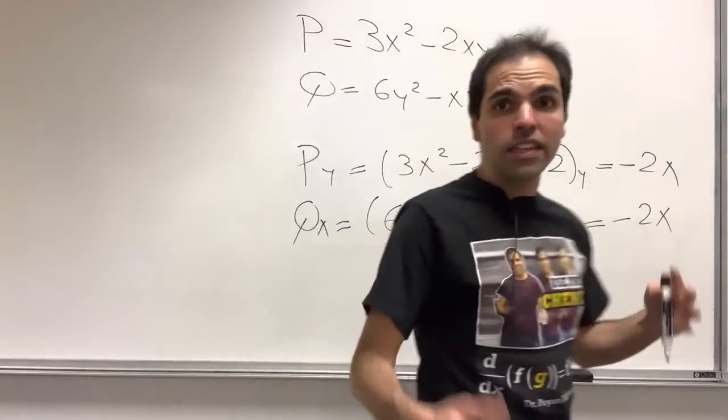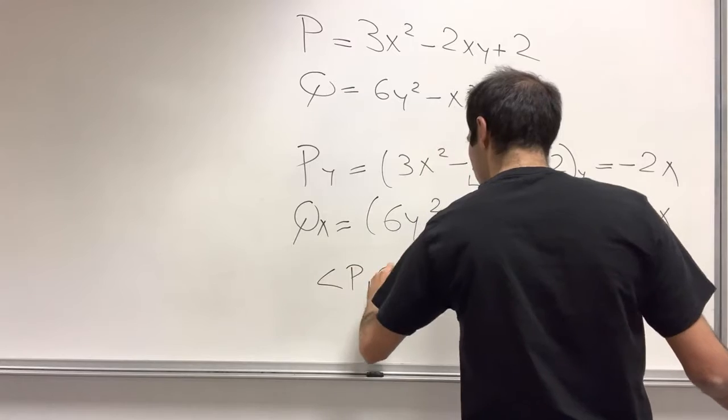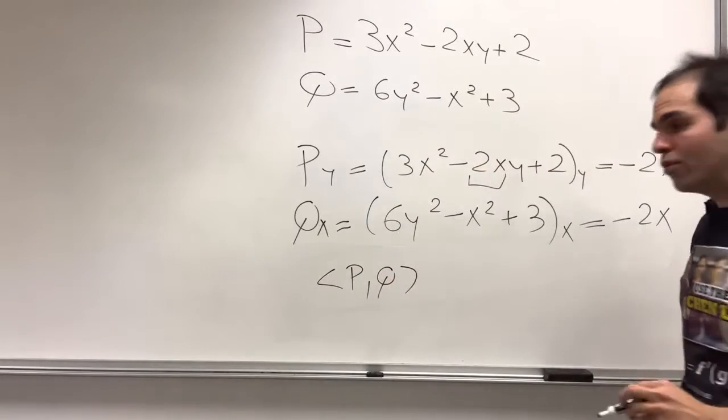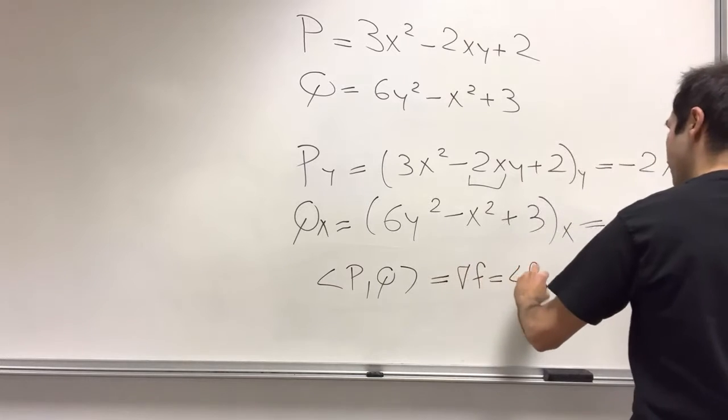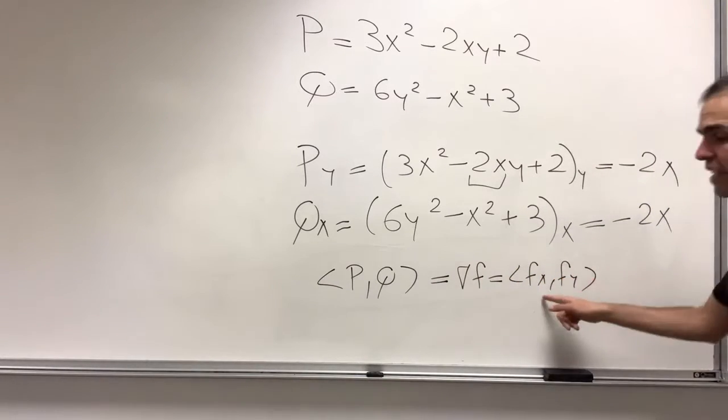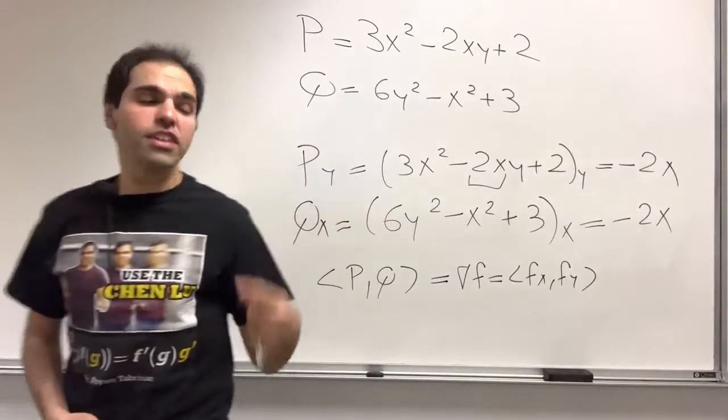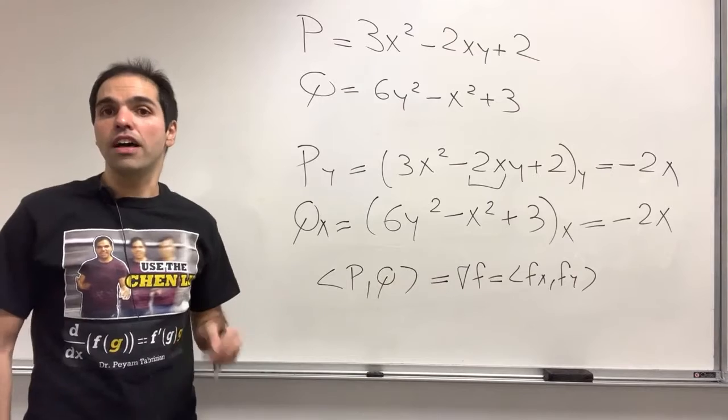Because what this is telling you is that if you take P, Q, this vector field if you wish, it is the gradient of a function. So it's gradient of f, so it's of the form f_x, f_y, which tells you that the x derivative of f is P and the y derivative of f is Q.